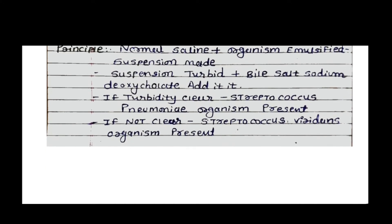Principle: जब normal saline में organism emulsify करते हैं तो suspension बनता है और suspension turbid हो जाता है। अब उनमें bile salt, sodium deoxycholate add करते हैं। अगर turbidity clear हो जाती है तो Streptococcus pneumoniae organism present है; अगर turbidity clear नहीं होती तो Streptococcus viridans organism present होते हैं।